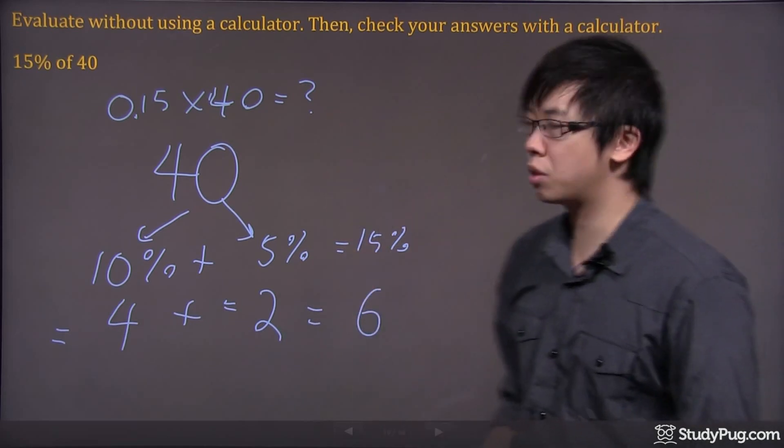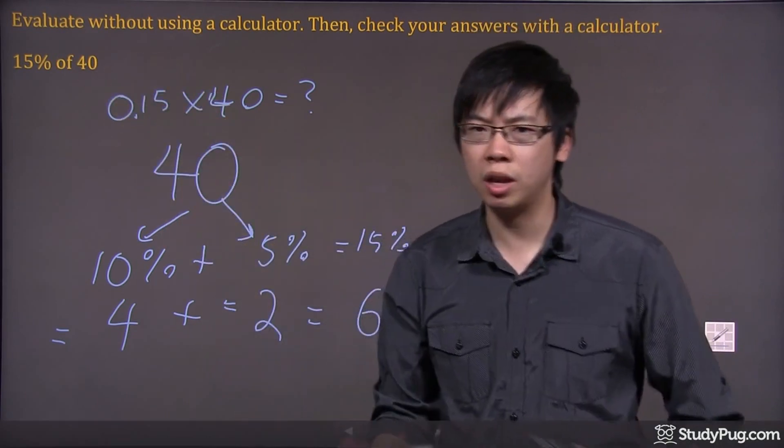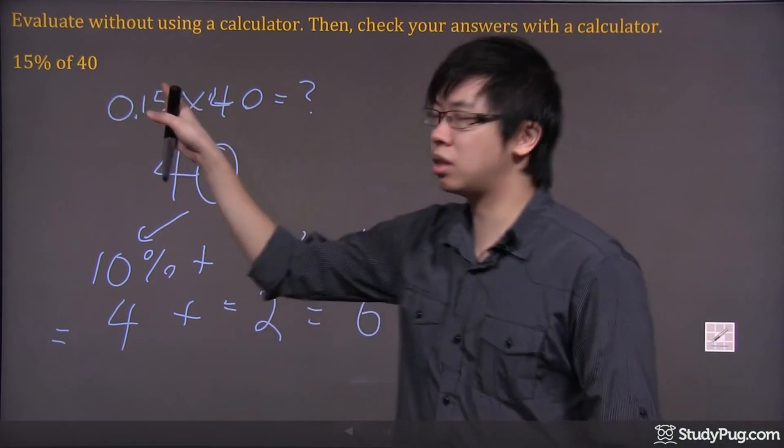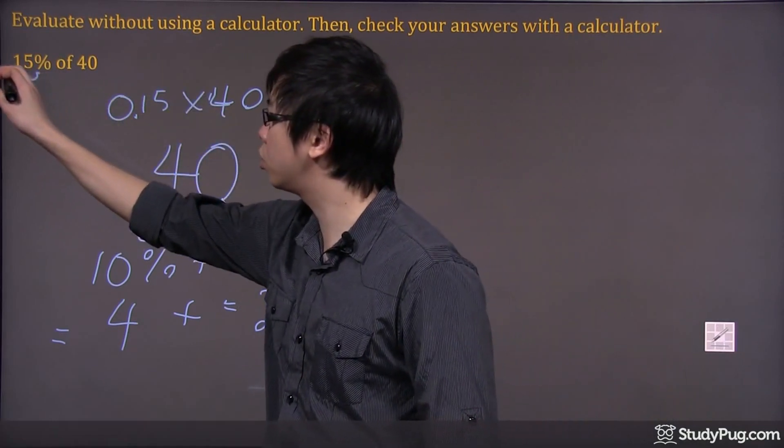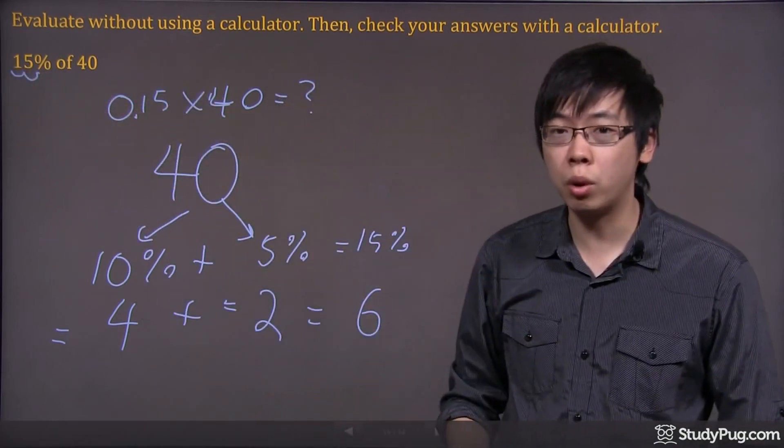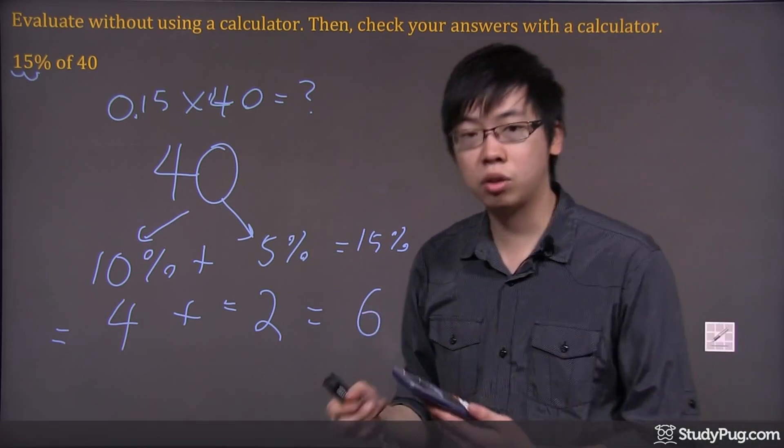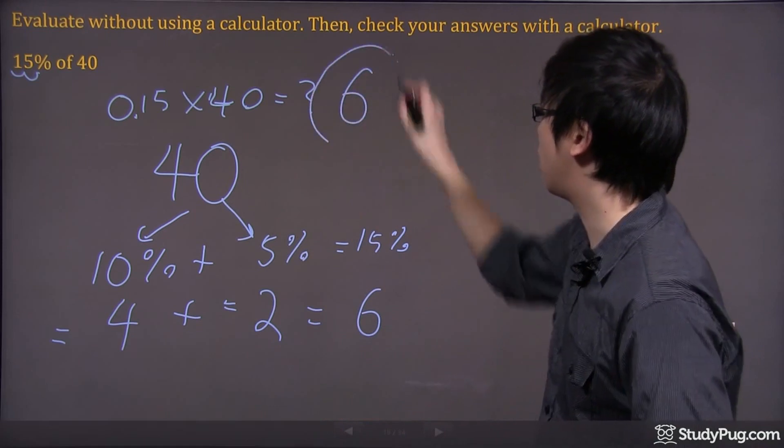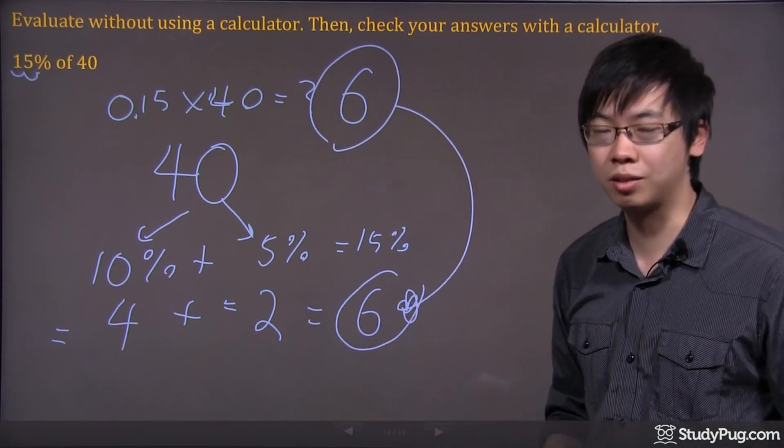Let's go back to the original question. If I said that 15% of 40, what is the answer? You would take the decimal form of the percentage by moving your decimal two places to the left, so you get 0.15. You take 0.15, times by 40, you get 6. And magically, they are the same as if you do it by hand. Thanks for watching.